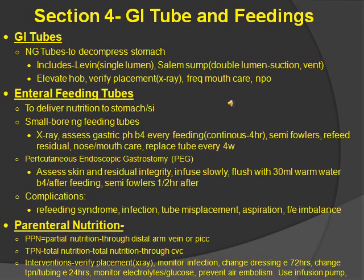Then we go on to parenteral nutrition, which can be through a PICC line, a central venous line, etc. PPN stands for partial parenteral nutrition, given through a distal arm vein or PICC line — used for patients who can eat but cannot take in enough nutrition. TPN is for someone who requires a large amount of nutrition for an extended time period; it's total parenteral nutrition given via a central venous catheter. Watch out for infection. Interventions: verify placement by x-ray, monitor for infection, change dressing every 72 hours, change TPN and tubing every 24 hours, monitor electrolytes. The number one thing they like to ask about TPN is glucose, because it can cause hyperglycemia since you're giving dextrose. Prevent air embolism, use an infusion pump, and keep 10% dextrose in water available in case TPN runs out.